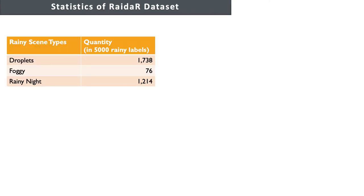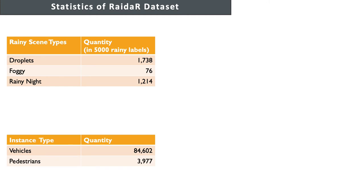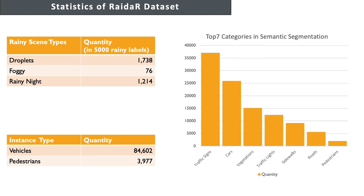According to the above contributions, we show some statistics of the RADAR dataset. In this table, we show the number of different rainy types in the 5,000 rainy labeled images. Ground truth rainy images are composed of 1,738 images with droplets, 76 foggy, and 1,214 captured at night. This shows the diversity of our dataset for different rainy scenarios. In this table, we show the number of instances labeled in instance segmentation. In this bar chart, we list the top seven categories in our whole dataset, including traffic signs, cars, vegetation, traffic lights, sidewalks, roads, and pedestrians — all the most important elements for autonomous driving.